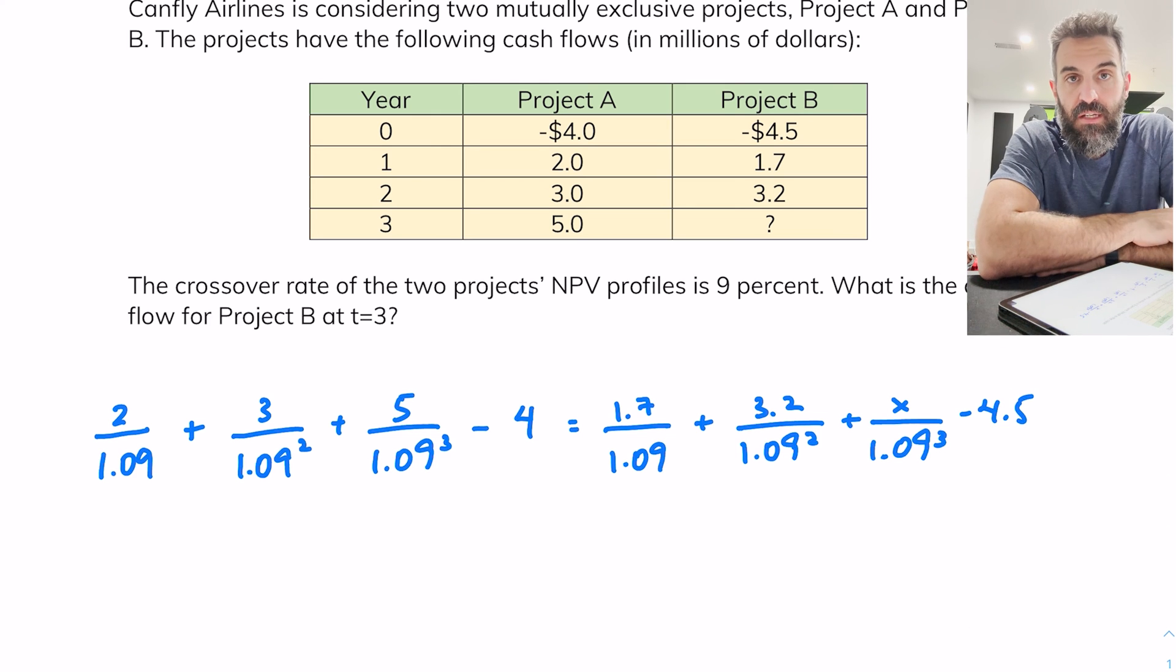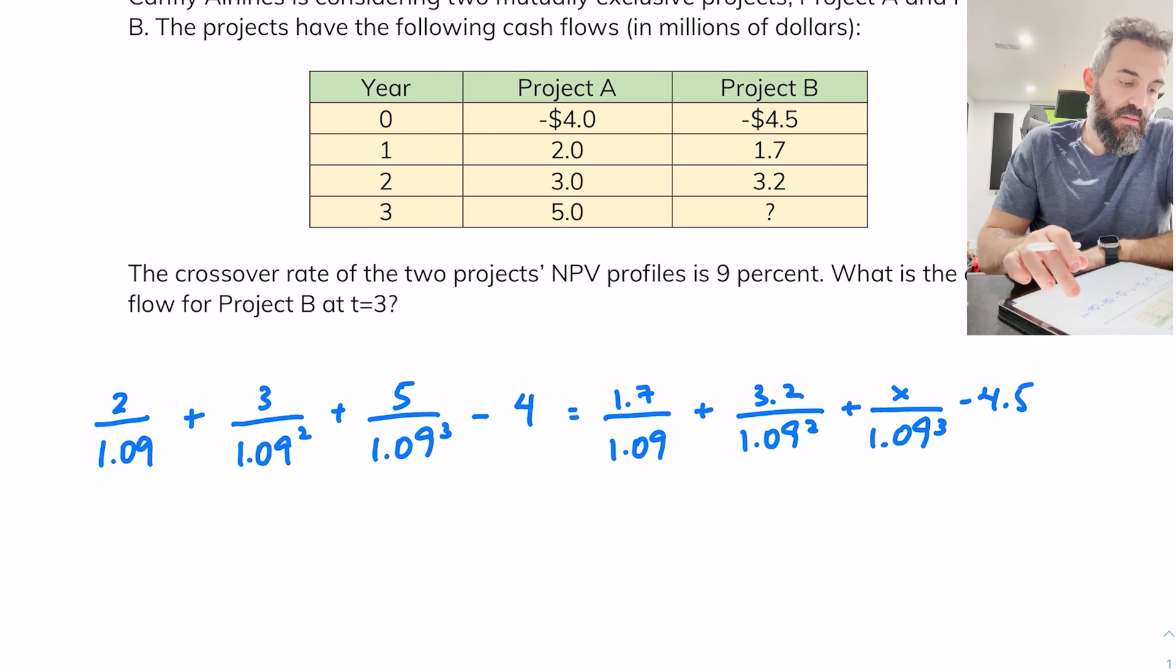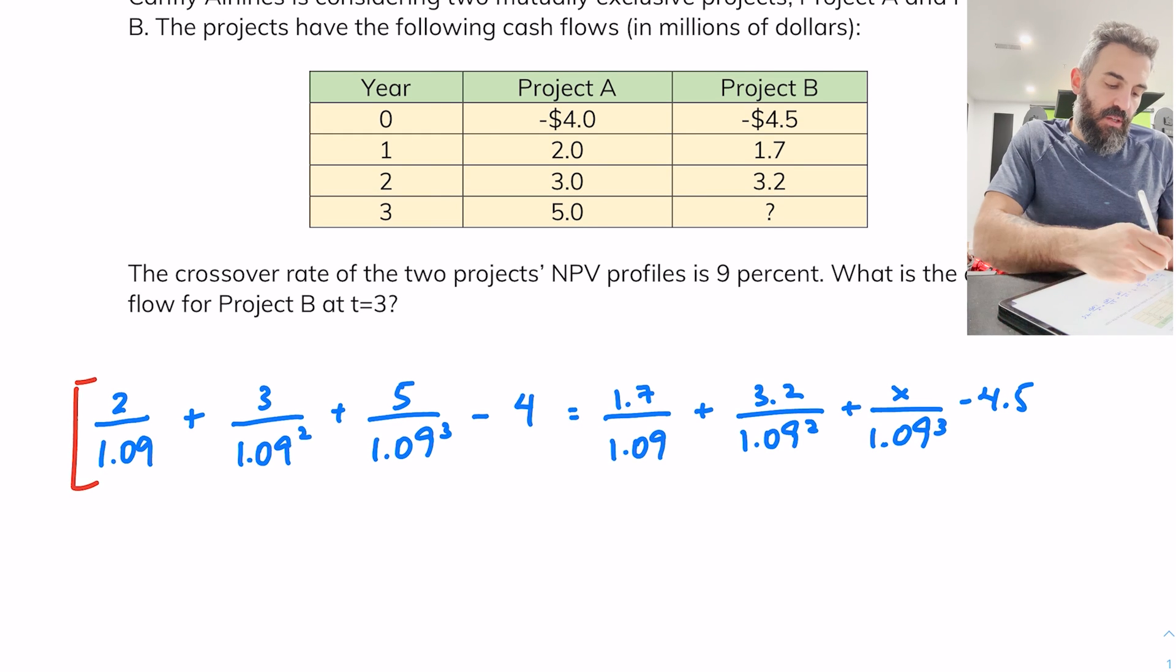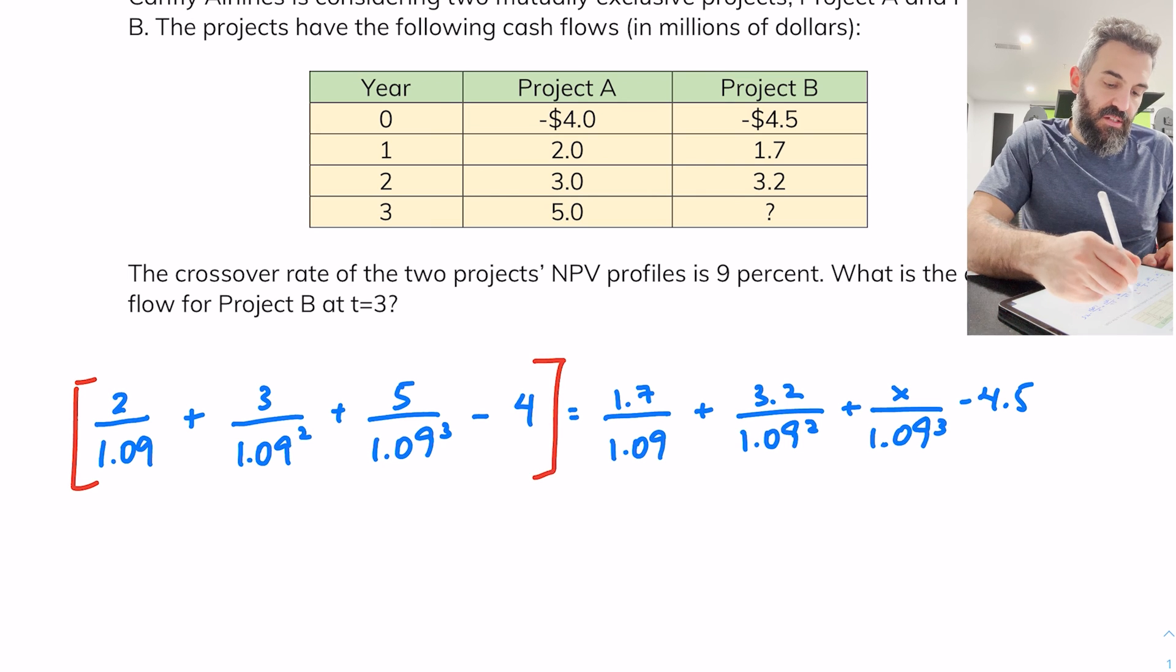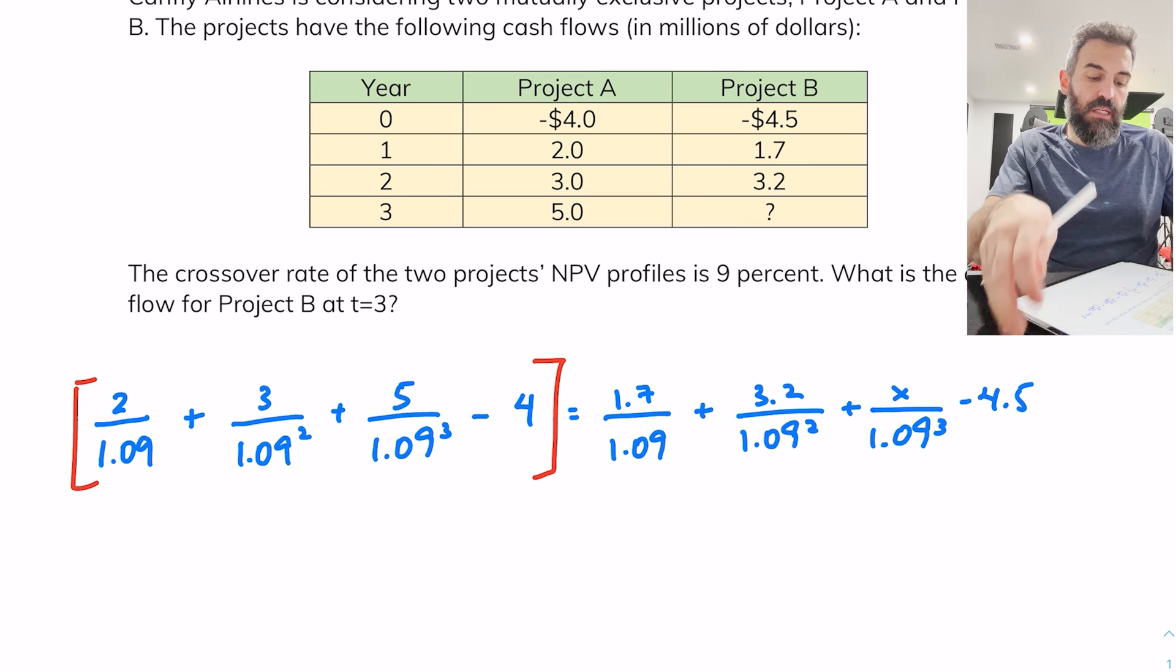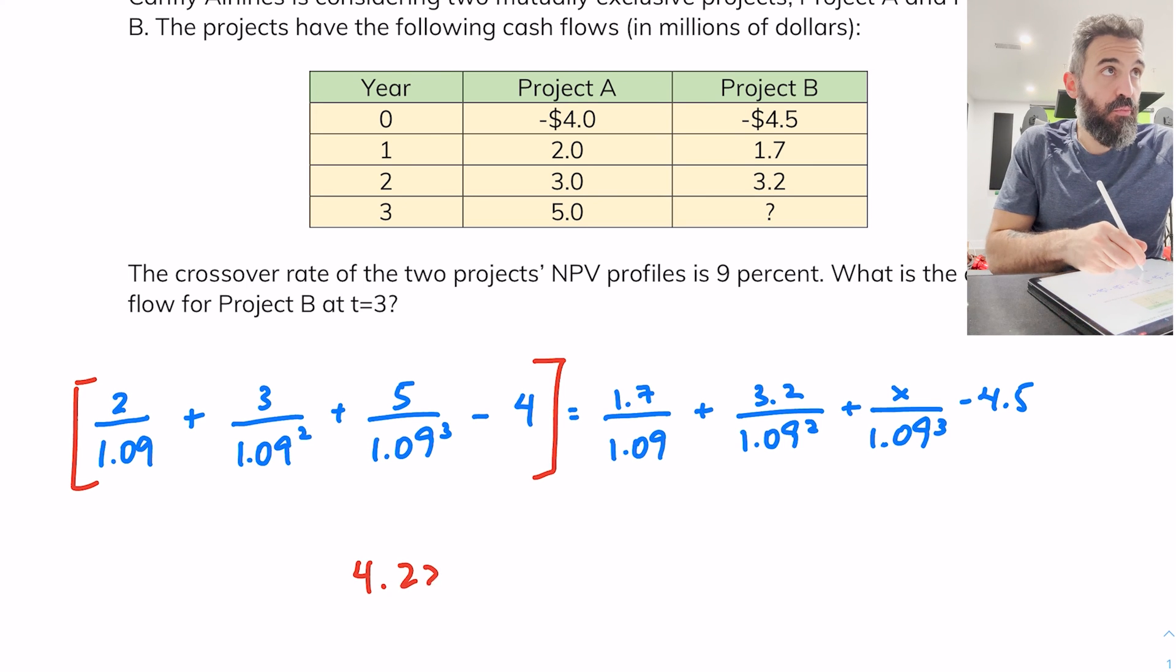And now all we need to do is algebraically solve for x and we would have our missing value. To do the algebra, what I would start with first is I'd calculate this entire thing. You can also do this on your financial calculator using your cash flow functions, so you should get a net present value of 4.2208.